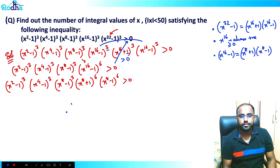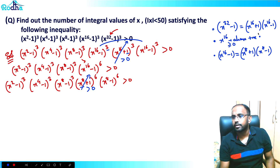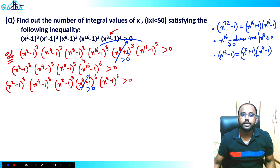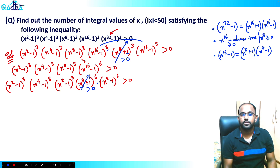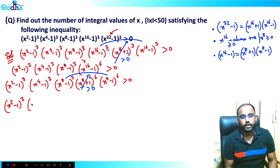Again, same idea: x⁸ + 1 is always positive because x⁸ is an even power, always greater than or equal to 0. Adding 1 makes it always positive. So divide that across the inequality and combine the remaining x⁸ - 1 terms. Powers 3 and 6 combine to give (x⁸ - 1)⁹.